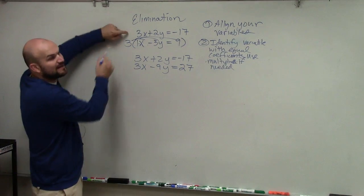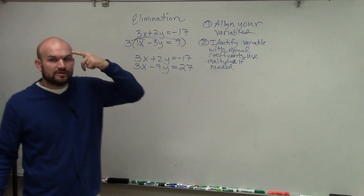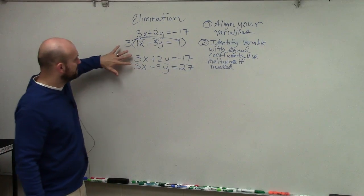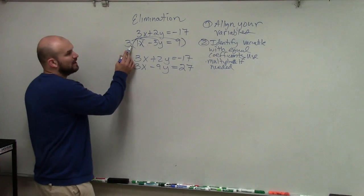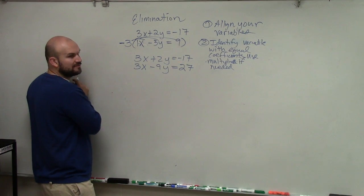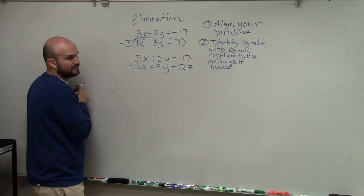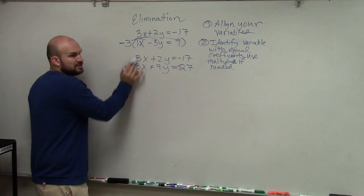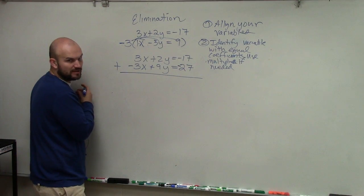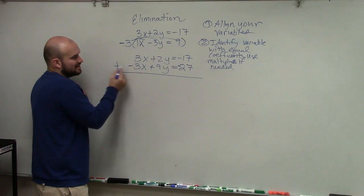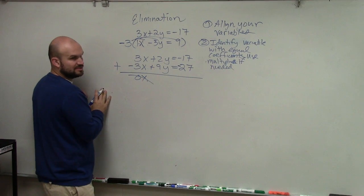Sometimes you might have to multiply both equations by a multiplier to get the same number. Now, I'll give you a tip: I do not like having the coefficients be the same sign. I like to have one positive and one negative so I can add them. So rather than multiplying by positive 3, I would multiply by negative 3, making that coefficient negative. I always prefer to add my equations rather than subtract. So 3x minus 3x is going to be 0x, which eliminates x.